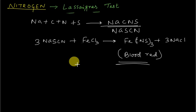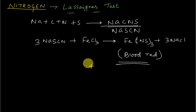This is very important: if blood red coloration appears in Lassaigne's test, sulfur is also present. Why is sodium used and not lithium or potassium? Because lithium reacts very slowly and potassium reacts very vigorously, so sodium is in the middle — that is why sodium is used.